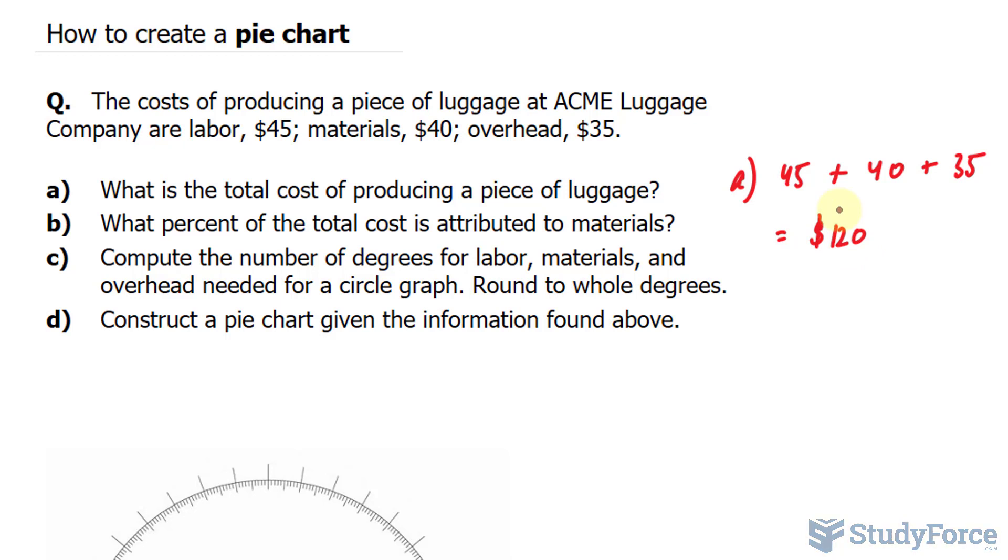What percent of the total cost is attributed to materials only? When it comes to percent, we'll take the cost of the materials, which is 40. So I'll write down $40 and divide it by the total cost, 120. Subsequently, whatever answer we get, we multiply it by 100%, and we will round to two decimal places.